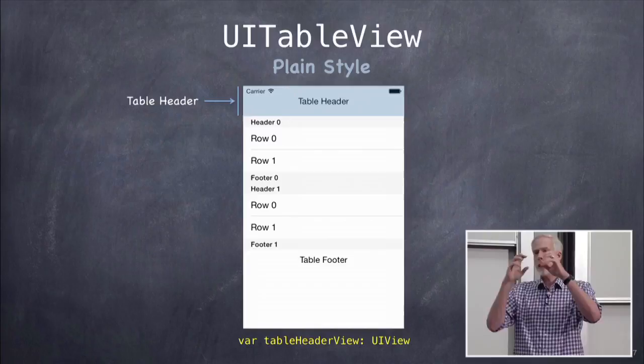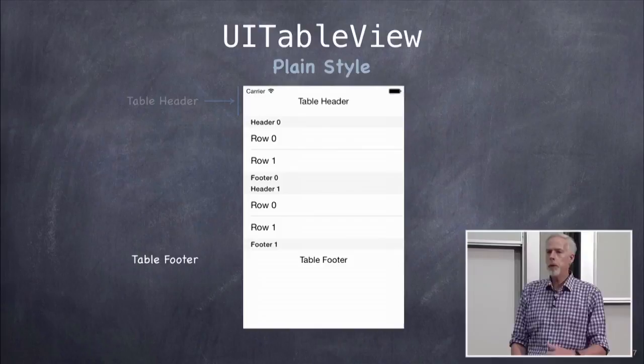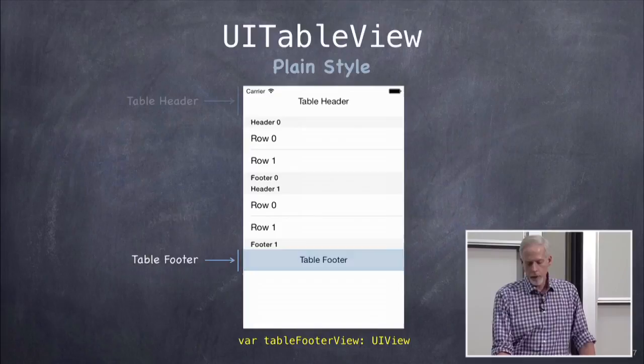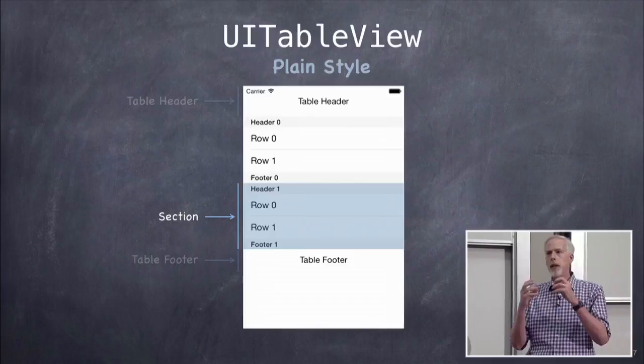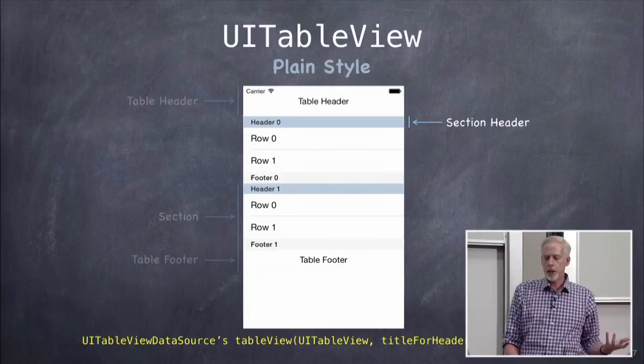Let's talk about the names of all the parts of a table view. First, we have the table header, which is a UIView. There's only one of them, sitting at the very top of the table — a good place for a search field. Similarly there's a footer view, a UIView that sits at the bottom. In between are sections — a section is a combination of a header and a footer, usually strings but also could be UIViews, plus any number of rows.